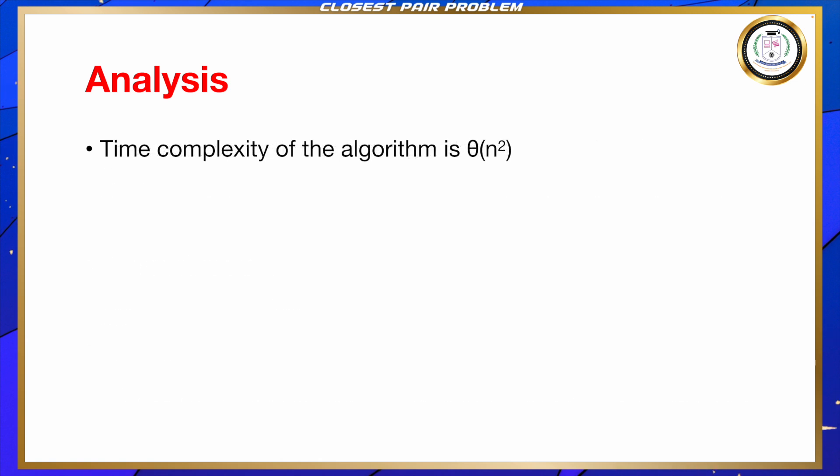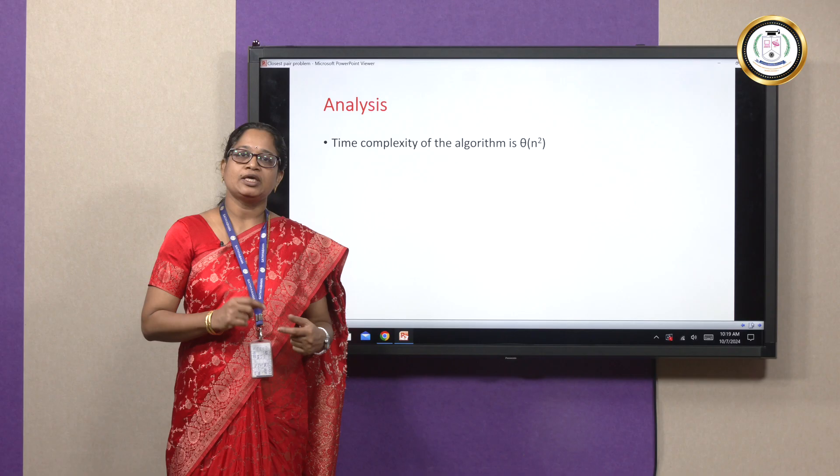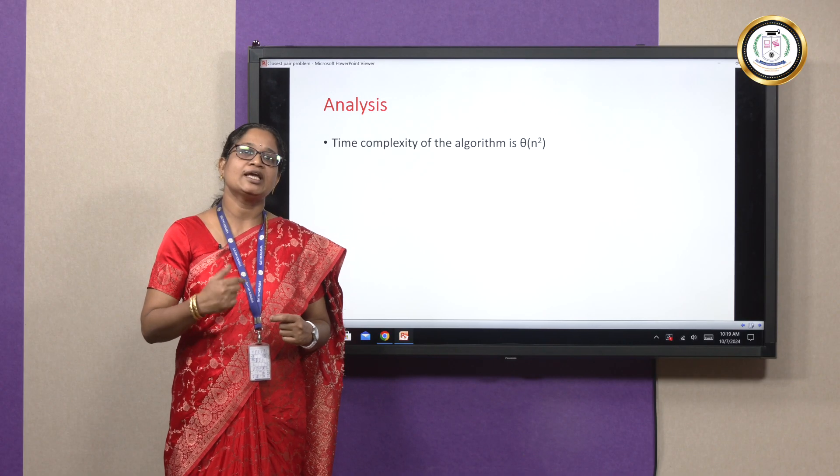The time complexity of the algorithm will be theta of n² because we have two for loops in the algorithm, each of the for loop will be executed n times. The total time complexity will be theta of n².